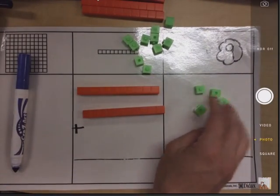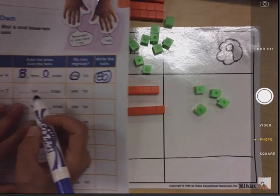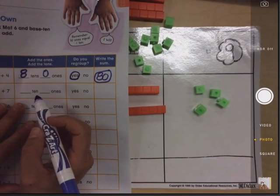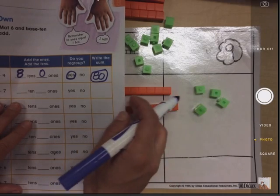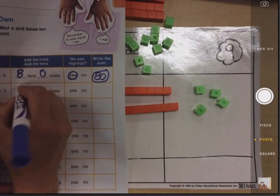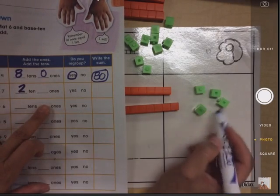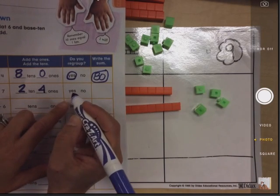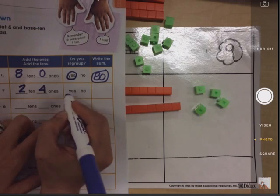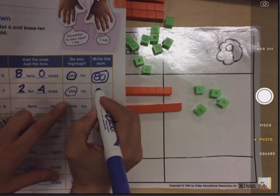And now let's fill out our response sheet. Find your response sheet, friends. How many longs do you have, thanks to Abby? Two. And how many ones do you have? Four. Everybody, did you regroup? Yes. And what is your final answer? 24.